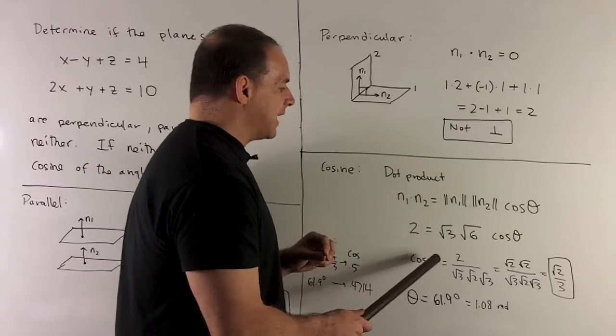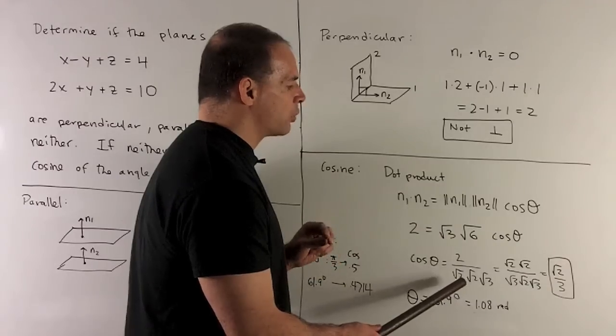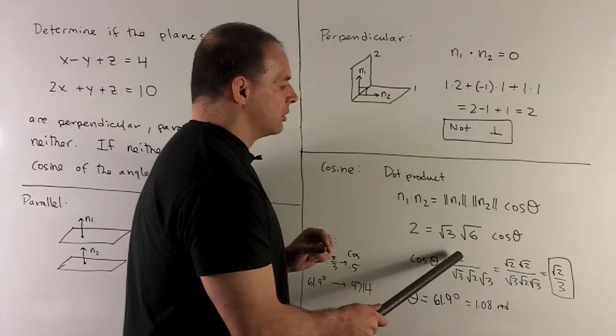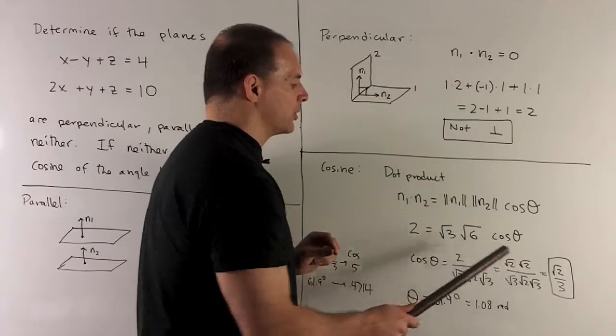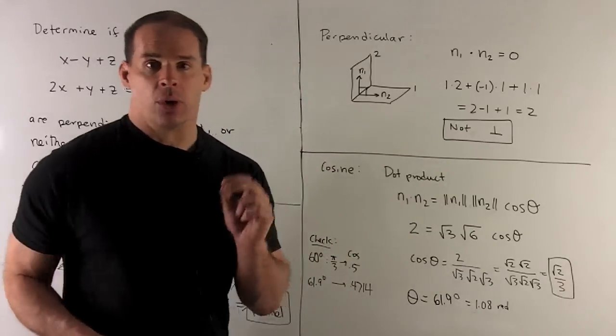So our cosine of the angle is 2 over square root of 3 square root of 6. I'll break up square root of 6 as square root of 2 square root of 3. Then I'll break up 2 as square root of 2 times square root of 2. Square root of 2s cancel, and I'm left with square root of 2 over 3 for the cosine.